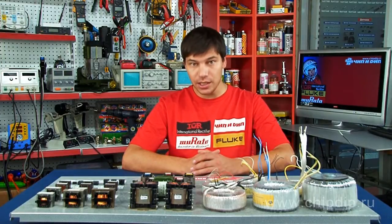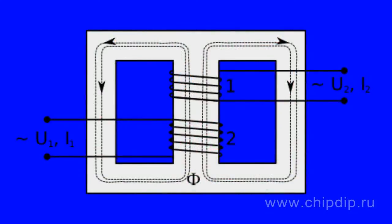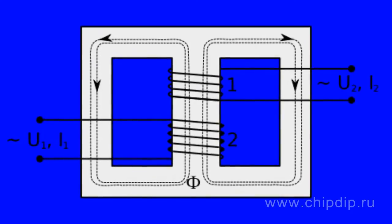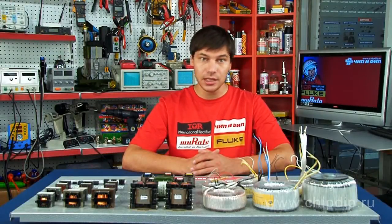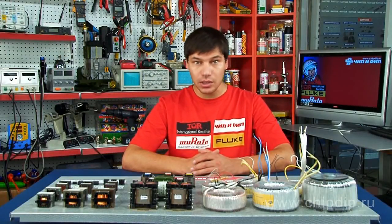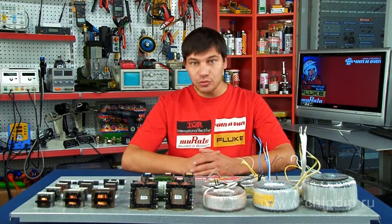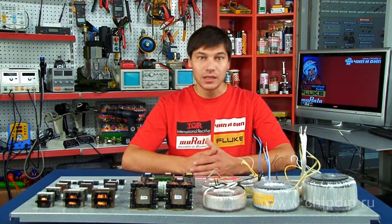The simplest power transformer consists of a magnetic circuit — in other words, of the core made of ferromagnetic material — and two windings located on the core limbs. One of the windings is connected to the alternating current source at the voltage U1; this winding is called primary. The second winding is connected to the consumer ZM; this winding is called secondary.